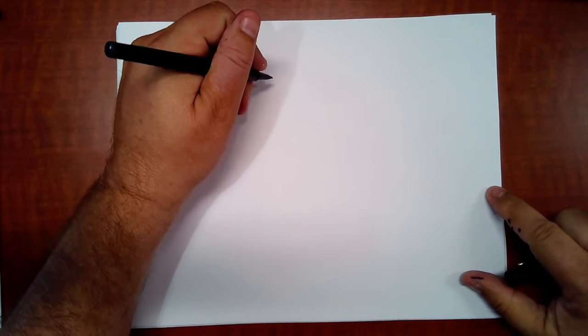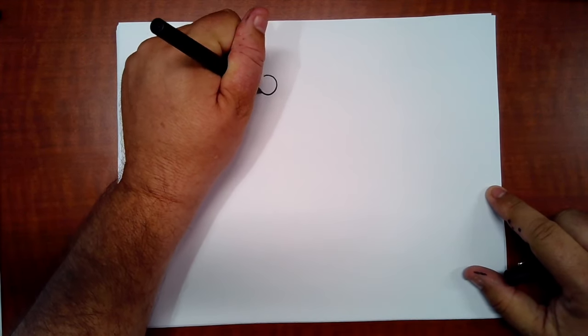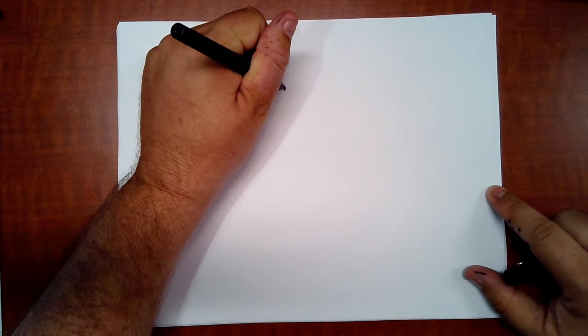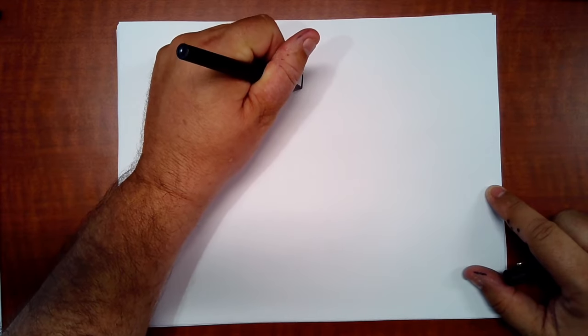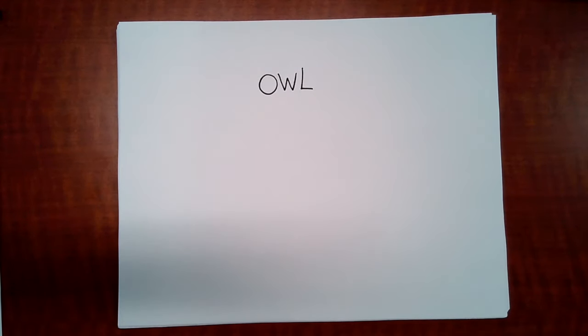Next we're going to learn how to draw an owl, and we're going to use the letters in its name to draw the owl. We're going to start with the letters O, W, and L. We're going to begin with the eyes.